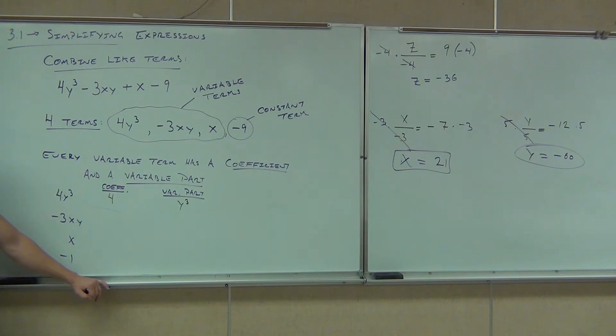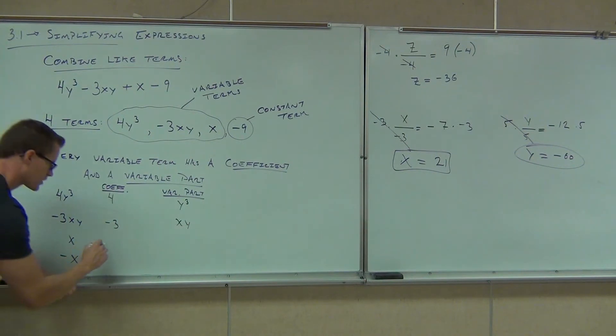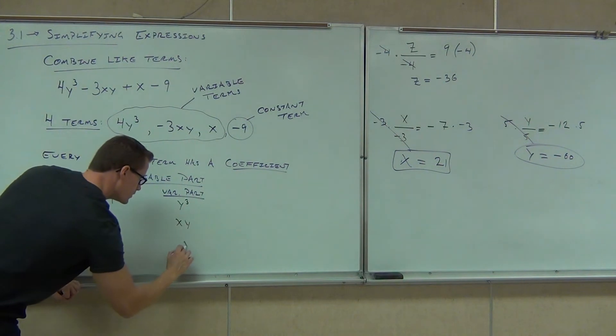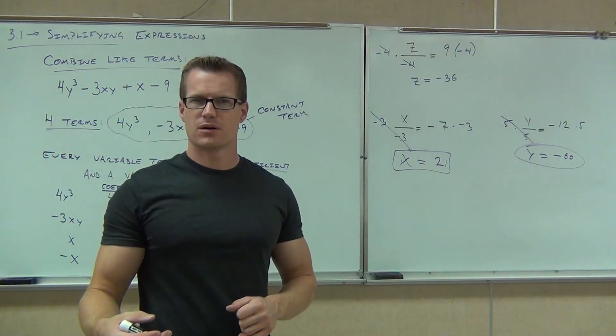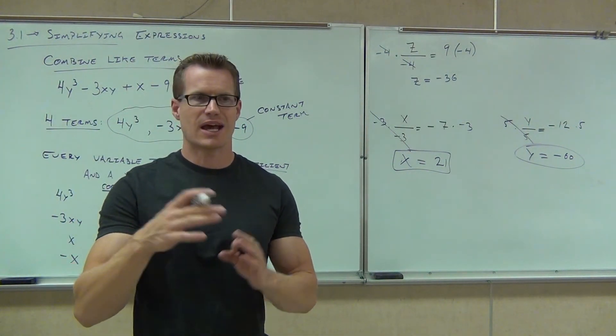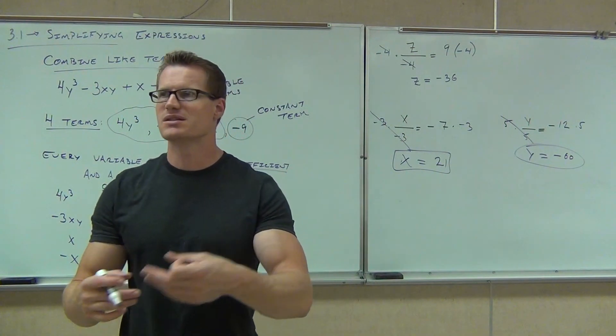It goes with the cube. The number is the coefficient. Everything else, all the variable stuff, that's the variable part. Let's do the next one. Can you tell me what the coefficient is? Yeah, it does go with the sine. So that's going to be negative 3. And the variable part? xy. Good. Now, how about this one? That's just an x. Does it have a coefficient? One. Yeah, it has a hidden coefficient. When you say x, you have like one x. So when we say this, the coefficient is actually one, and the variable part is still x.